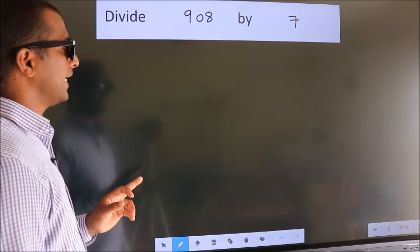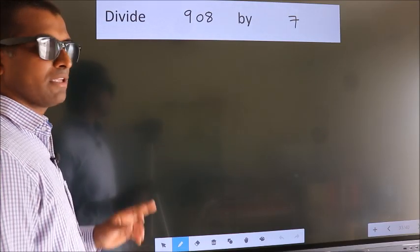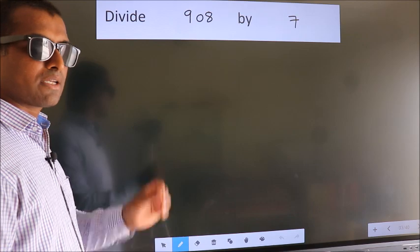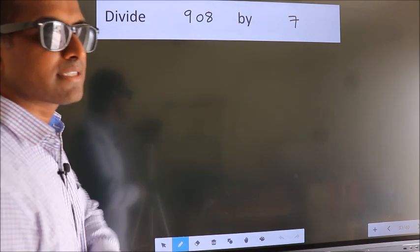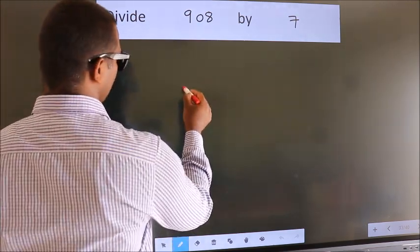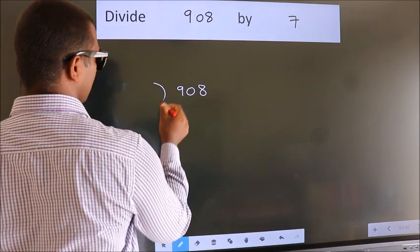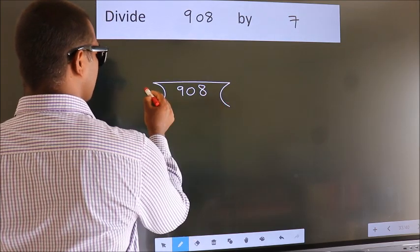Divide 908 by 7. To do this division, we should frame it in this way. 908 here, 7 here.